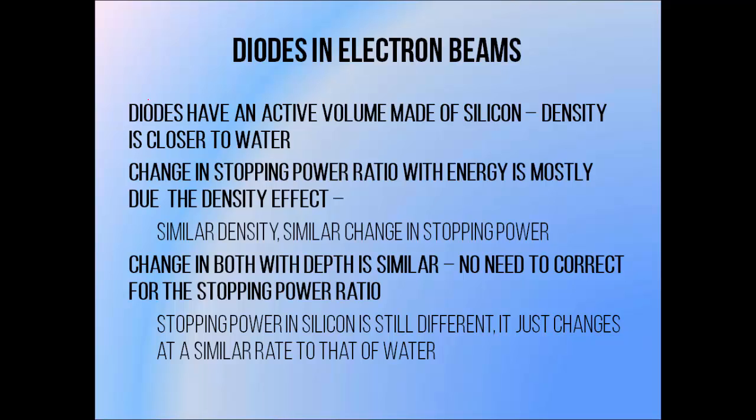Everything that I've said so far about percentage depth dose curve corrections in electron beams is applicable to curves measured using ionization chambers. When using diodes, though, the situation is very different. The active volume of a diode detector is made of silicon, which has a density that's much closer to water than that of air. And since the change in stopping power ratio with energy is mostly due to the density effect, the similar densities of the two materials result in a similar change in stopping power in silicon and water with energy.